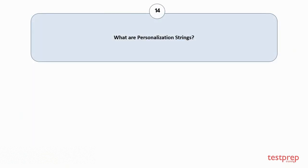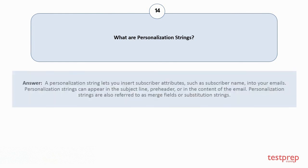Question number fourteen: What are personalization strings? A personalization string lets you insert subscriber attributes such as subscriber name into your emails. Personalization strings can appear in the subject line, pre-header, or in the content of the email. Personalization strings are also referred to as merge fields or substitution strings.